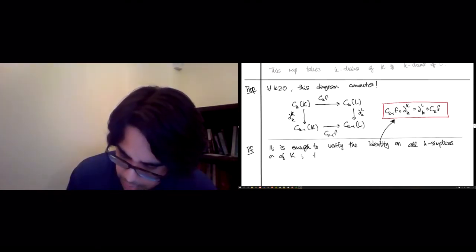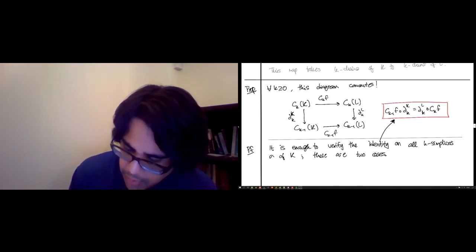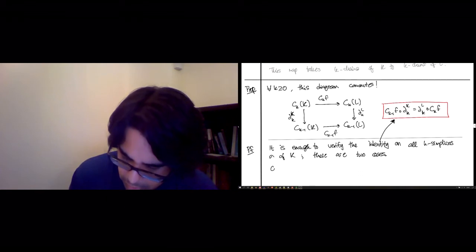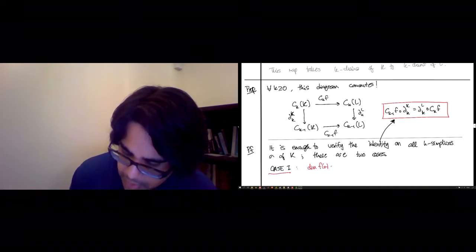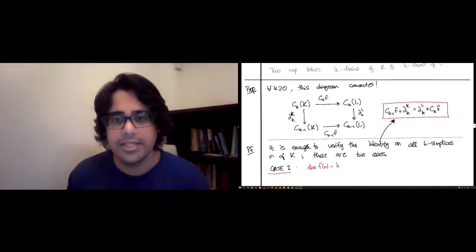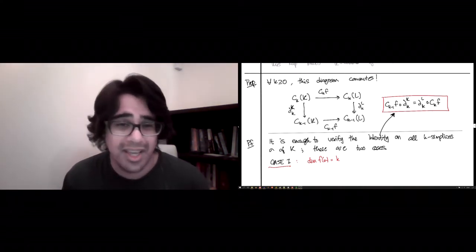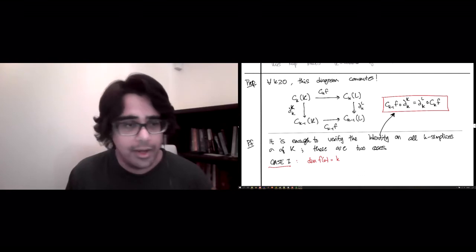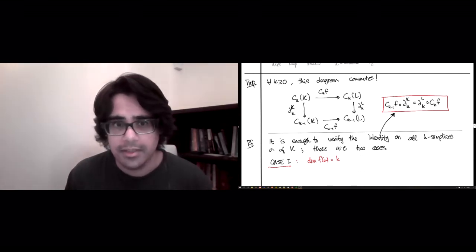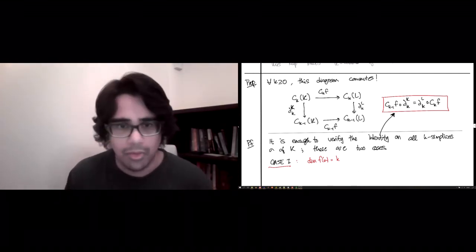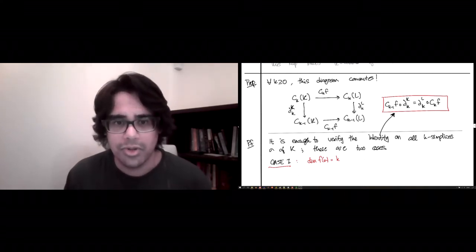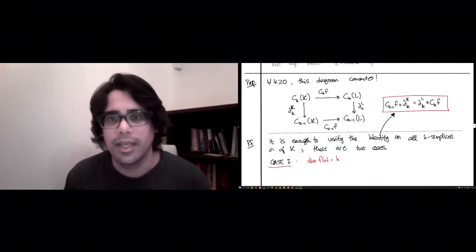So let's start with, there are two cases. Case one is dimension f(σ) is the same, so f is injective on the vertices of σ. And I'll work this case out and show you how it goes. It's a nice and fairly natural proof. And we'll leave the other case as reading material.